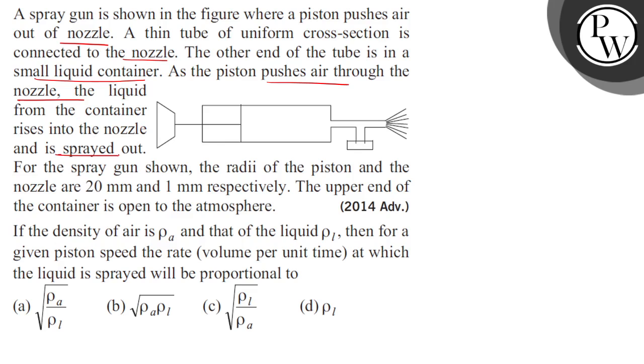As the piston pushes air through the nozzle, the liquid from the container rises into the nozzle and is sprayed out. For the spray gun shown, the radii of the piston and the nozzle are 20 mm and 1 mm respectively. The upper end of the container is open to the atmosphere. If the density of air is rho_a and that of liquid is rho_l,